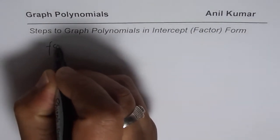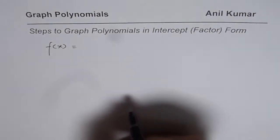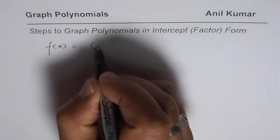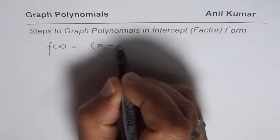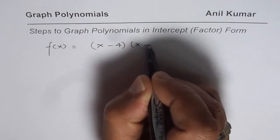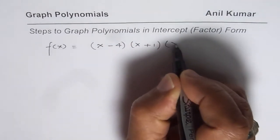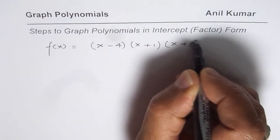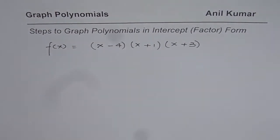We will take f(x) equals, let us say cubic polynomial with 3 factors. That means x minus, let us say it is 4, and x plus 1 times x plus 3. So we are taking an example where we have 3 different factors.